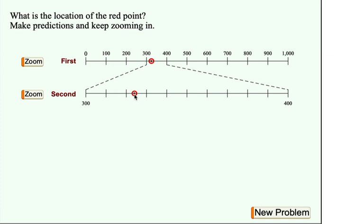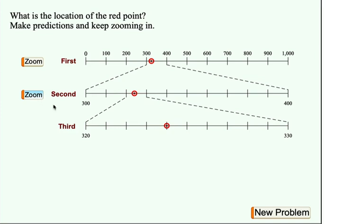How am I going to check? Well, you guessed it, I'm going to zoom in again, this time on this interval here between 320 and 330. And let's see. Oh, okay. Now each tick represents one. So the exact location of our point is 324.